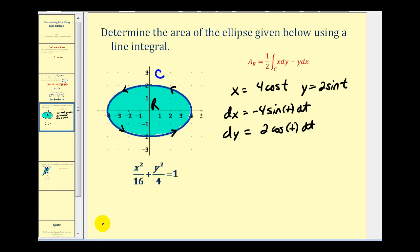So we can use all of this to perform substitution into our line integral. So the area of this region would be equal to one-half times the line integral of x dy, that's going to give us four cosine t times dy, which is two cosine t dt.